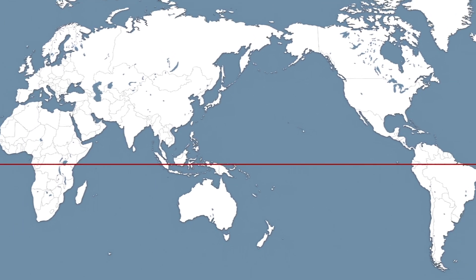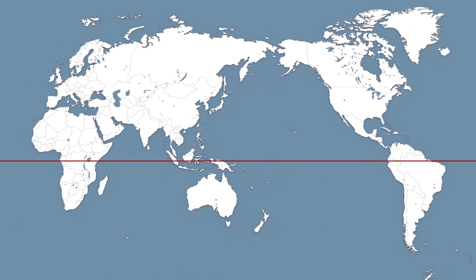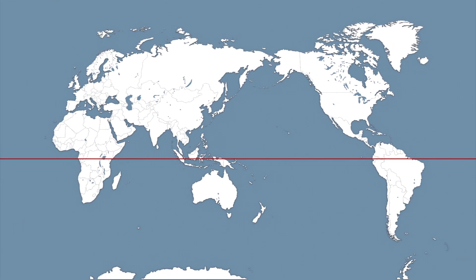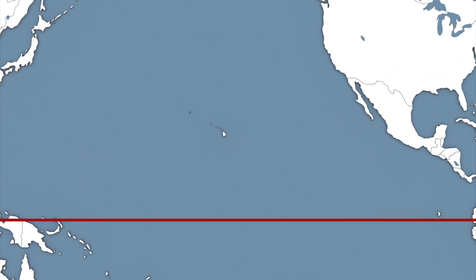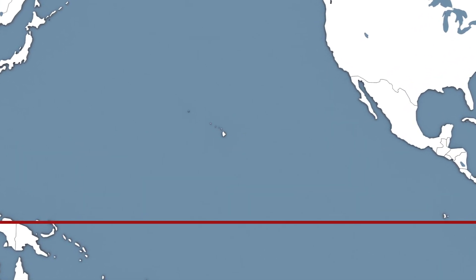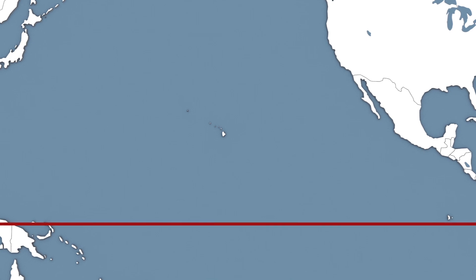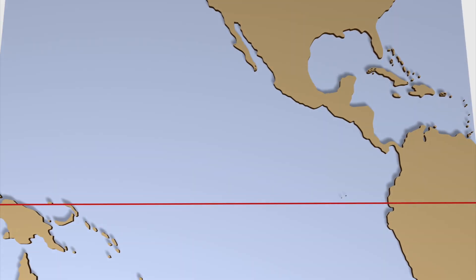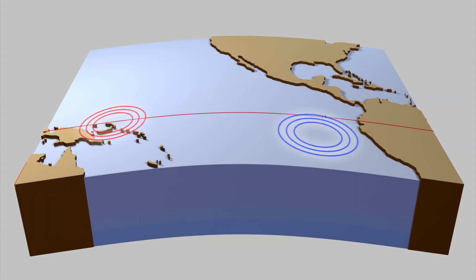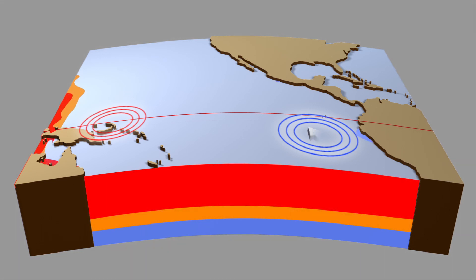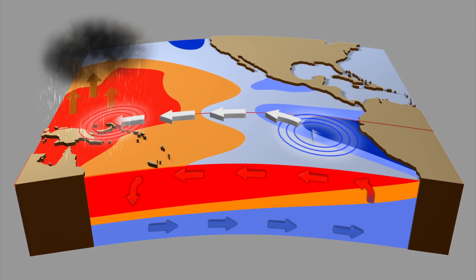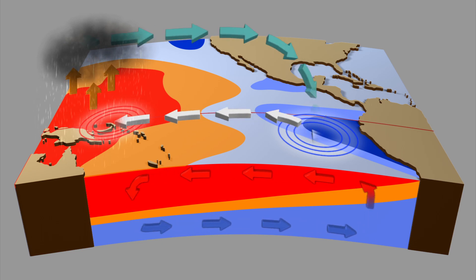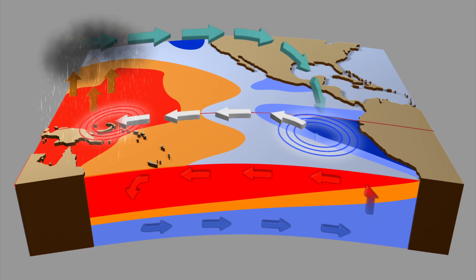The National Oceanic and Atmospheric Association, or NOAA, has observed water temperatures in the equatorial Pacific Ocean remain 0.5 degrees Celsius above average for over three months. Trade winds blowing from east to west across the equatorial Pacific send warm surface waters to the eastern Pacific, generating a low-pressure area over which storms form.